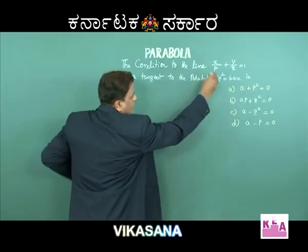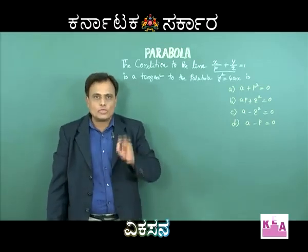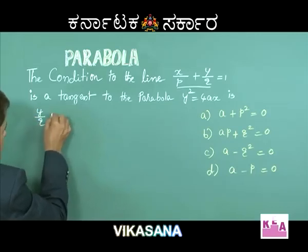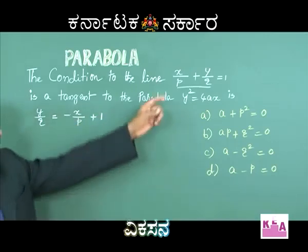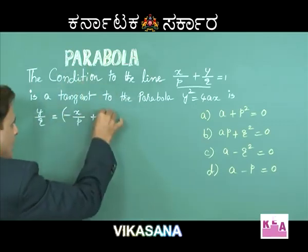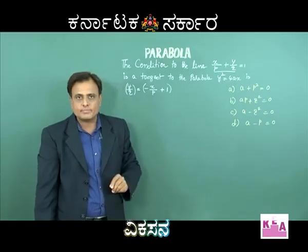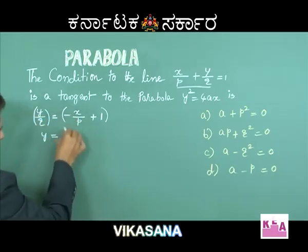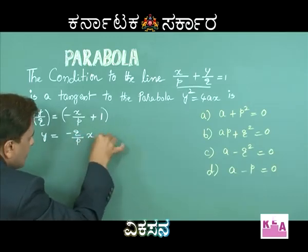Before applying the condition, take the given equation and express it in the form of y = mx + c. The given equation can be written as y/q = -x/p + 1. Multiplying both sides by q, we get y = (-q/p)x + q.